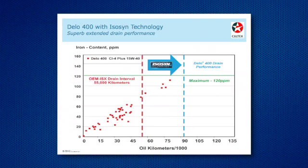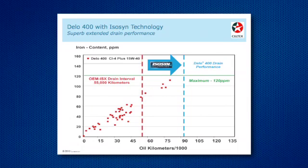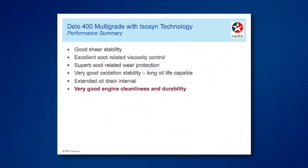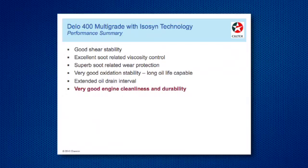Iron on the Cummins ISX-15 — pretty much under control. 120 parts per million is the max, getting out to that 75,000 kilometers. We're still getting farther than what the red dotted line indicates as the OEM maximum drain level — getting past that by at least 15,000 to 20,000 kilometers. So the performance summary: good shear stability, excellent soot-related viscosity control, oxidation stability, and extended drain intervals. You're able to go farther than you think with Delo 400.